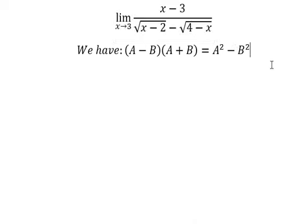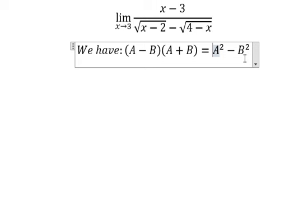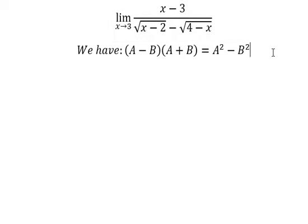In this one we have A minus B. We want to cancel the square root, so we need to have the power number two. To create this one, we need to multiply by A plus B on numerator and denominator.